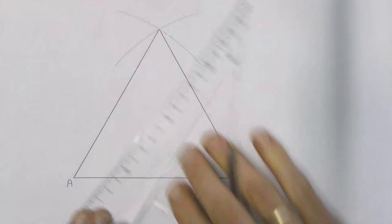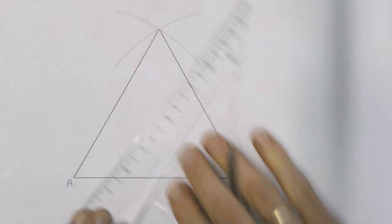And if we've been accurate, that gives us an equilateral triangle with all three sides exactly the same length.